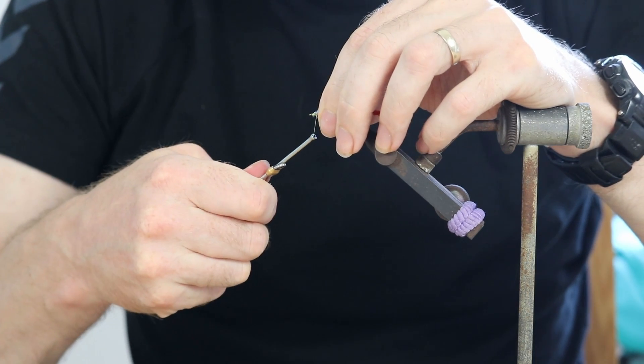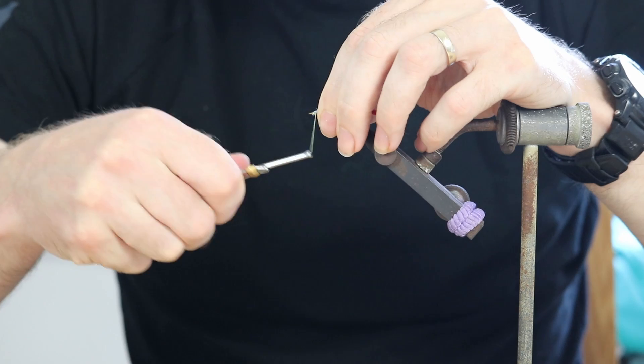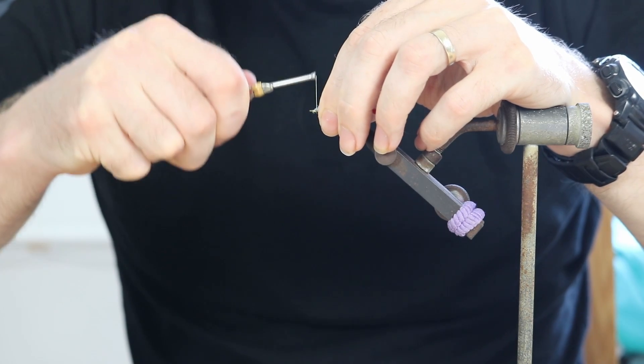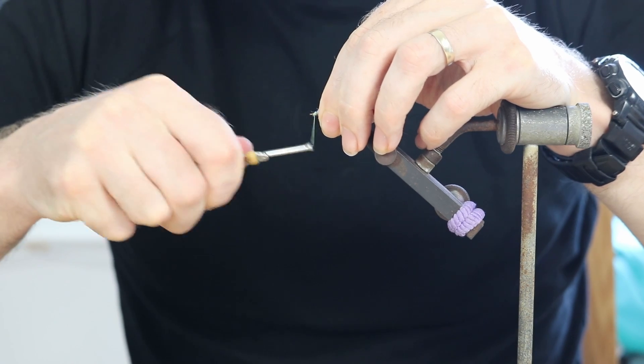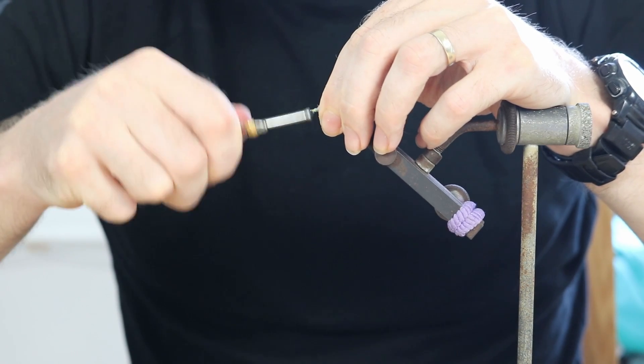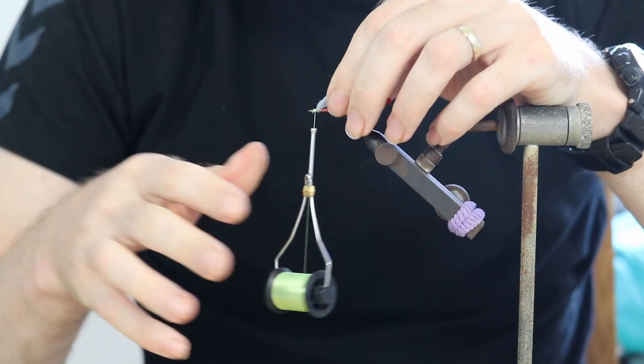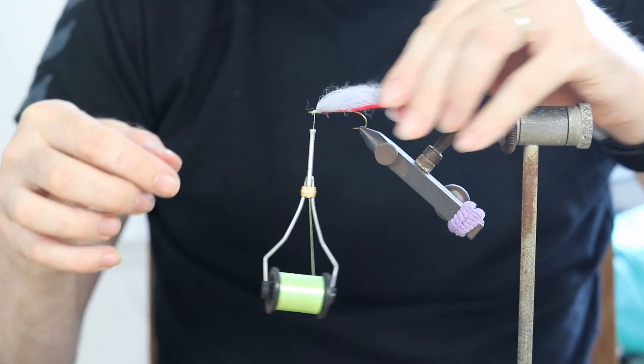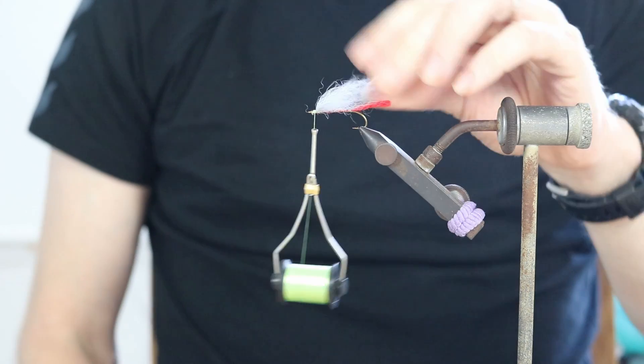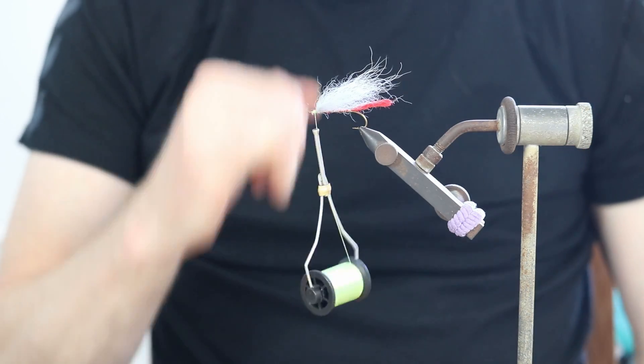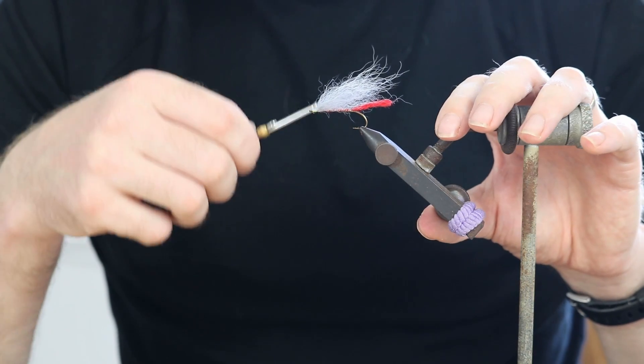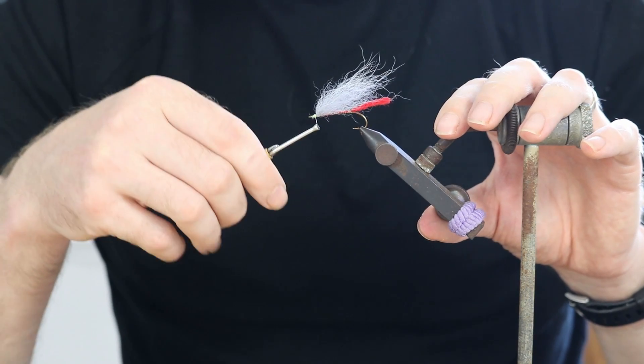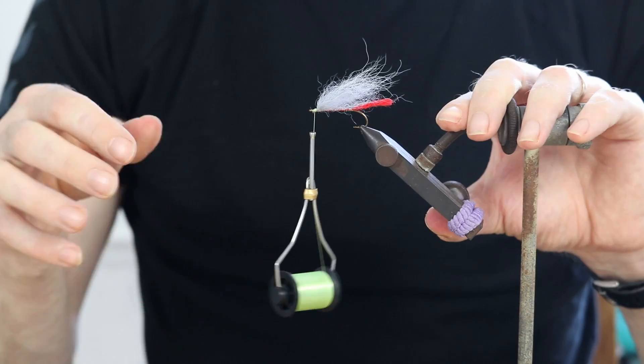So what we can then do is we can go one, two, three, and then we can design and form the head the way we want. And we know that these hairs are not coming loose or going anywhere. It's a good way to minimize your amount of wraps, make small heads at the front of the fly.